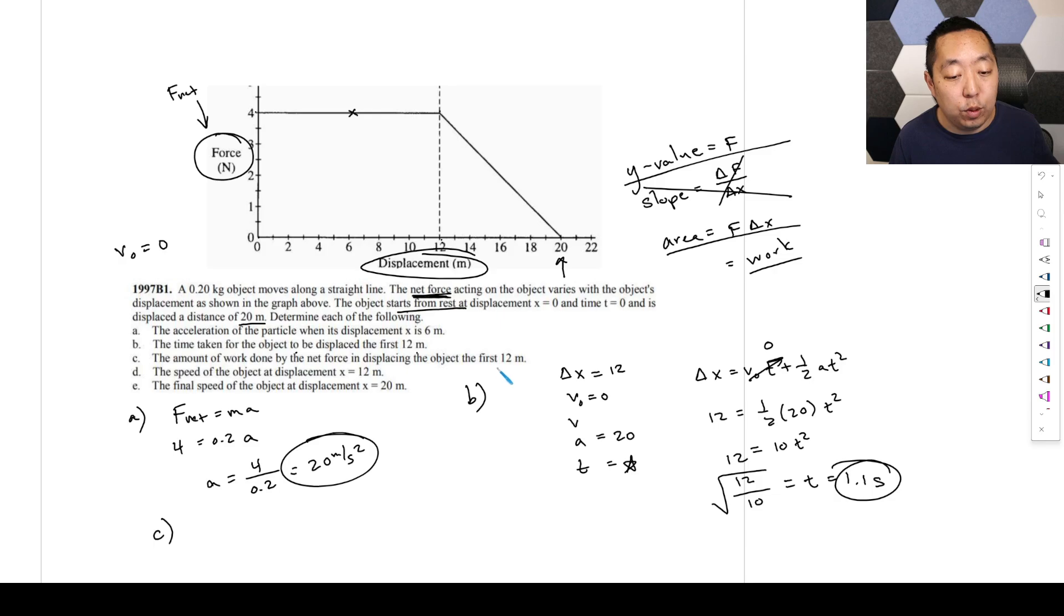Part c: the amount of work done by the net force displacing the first 12 meters. We're just going to do the area calculation here. Note they say the first 12 meters. So this is a rectangle. You're just going to say 4 times 12, which is going to be 48 joules. You might have been like, can't I just do F times delta X? That's fine if the force is constant. That's going to give you the area. But as the force varies, you can't just multiply these two because the force is changing. So this F times delta X is really like an area calculation.